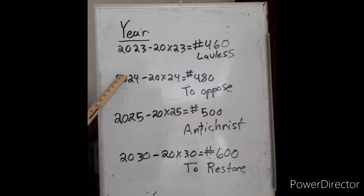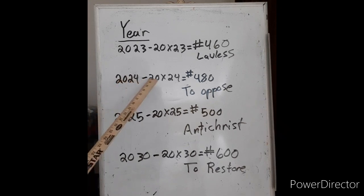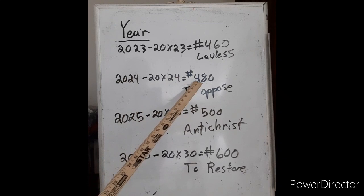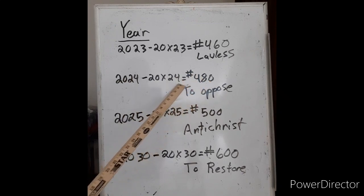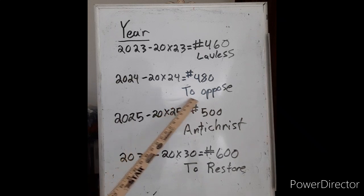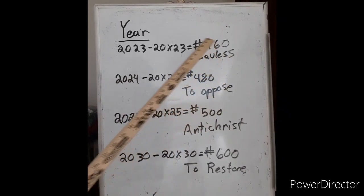What about the year 2024? Well, let's be fruitful and multiply it. 20 times 24 is 480. 480, the number in the Strong's Greek concordance means to oppose. To oppose the lawless.